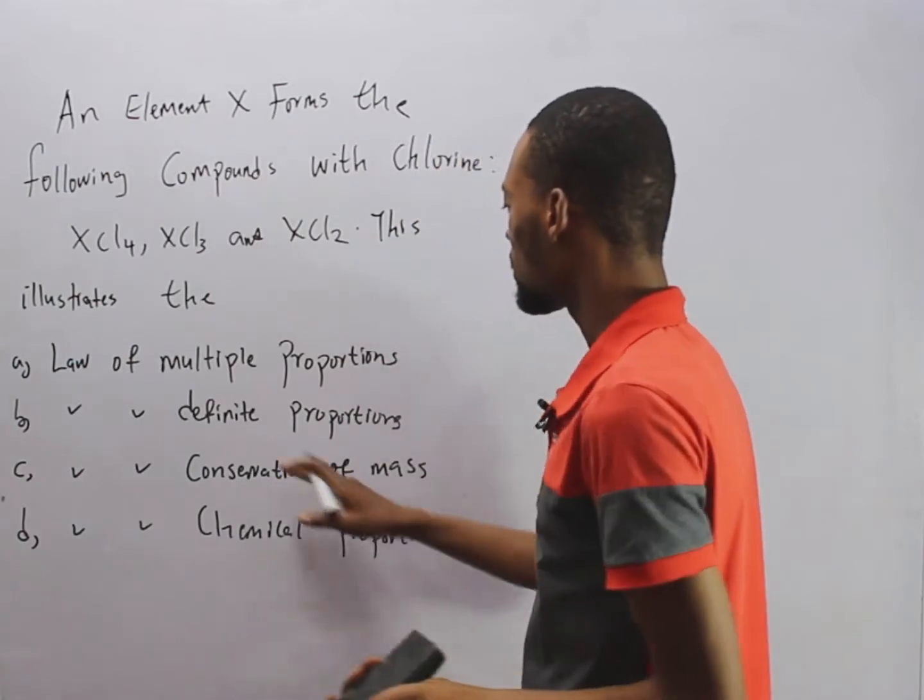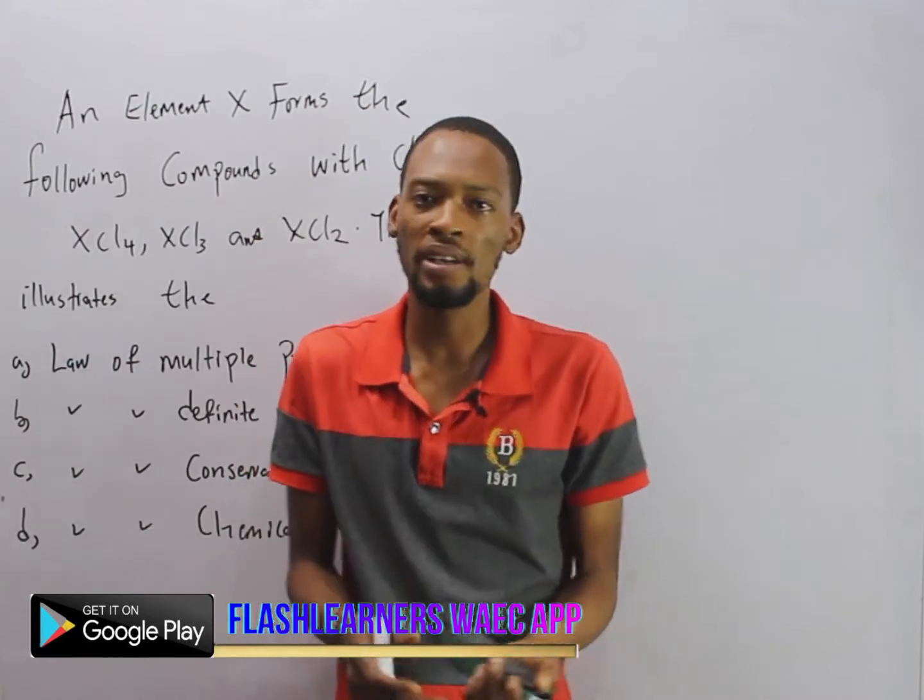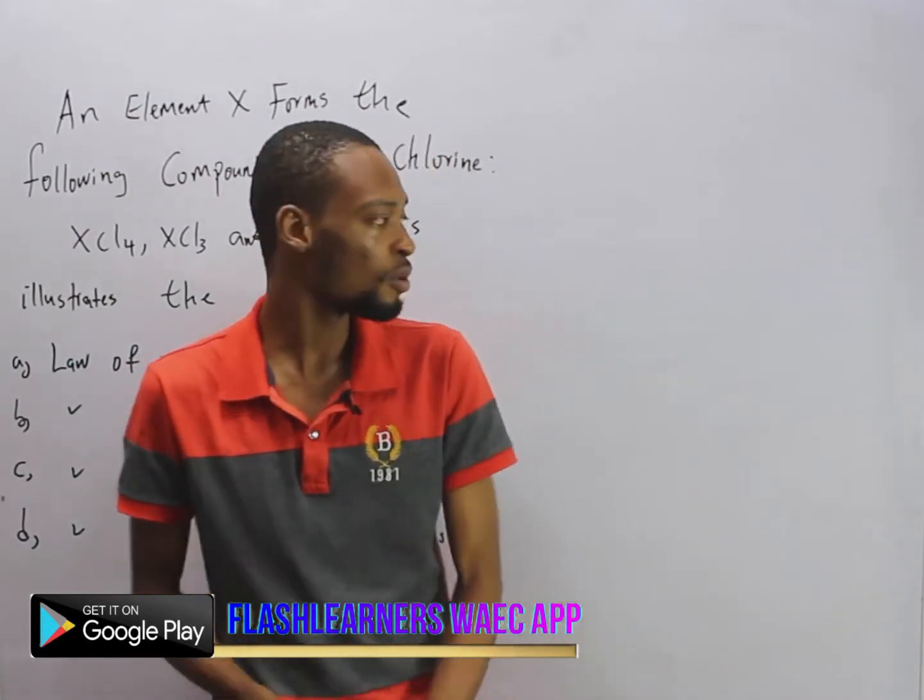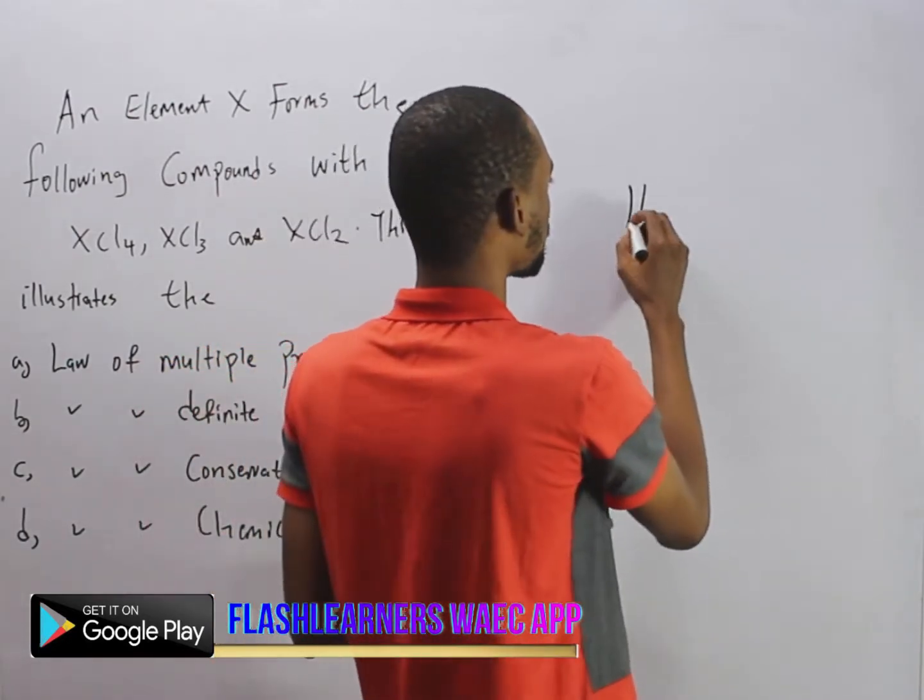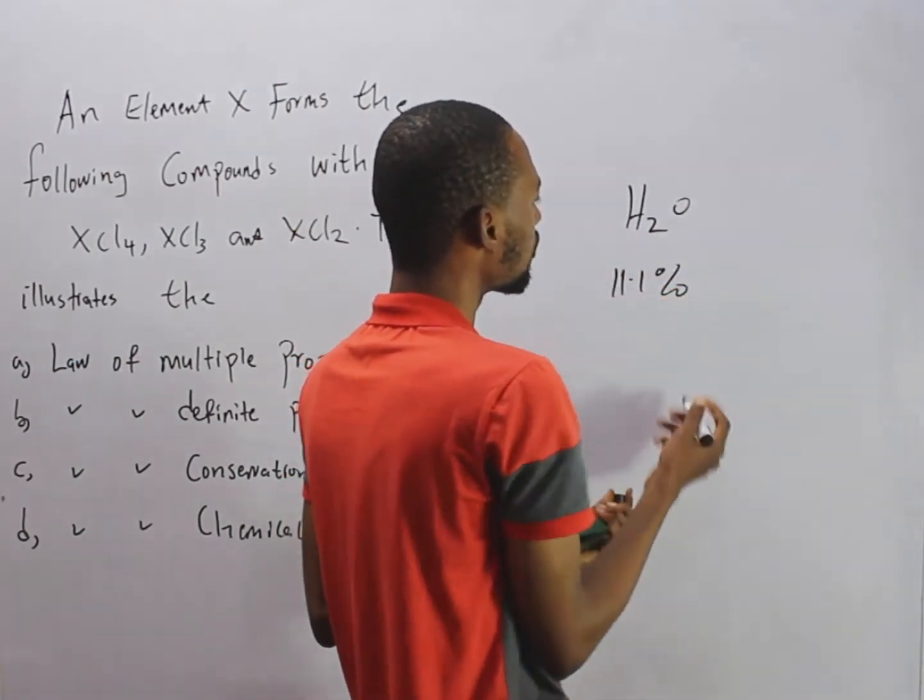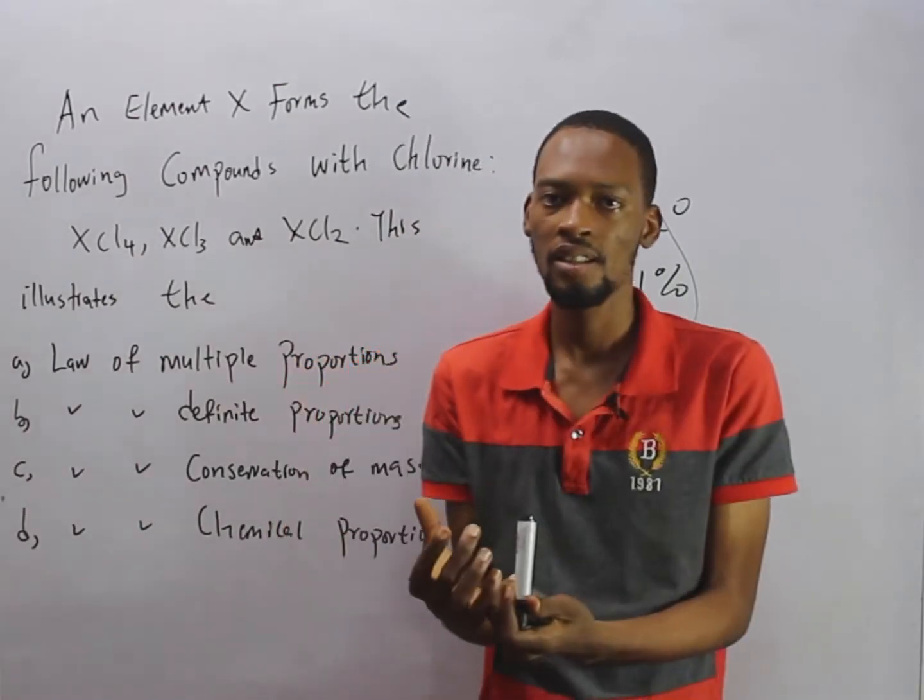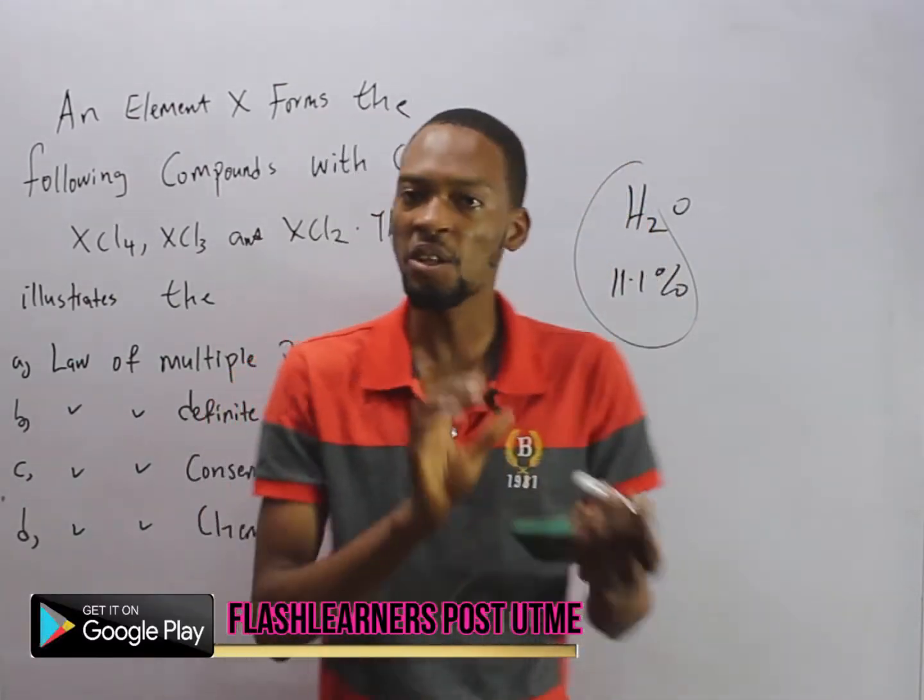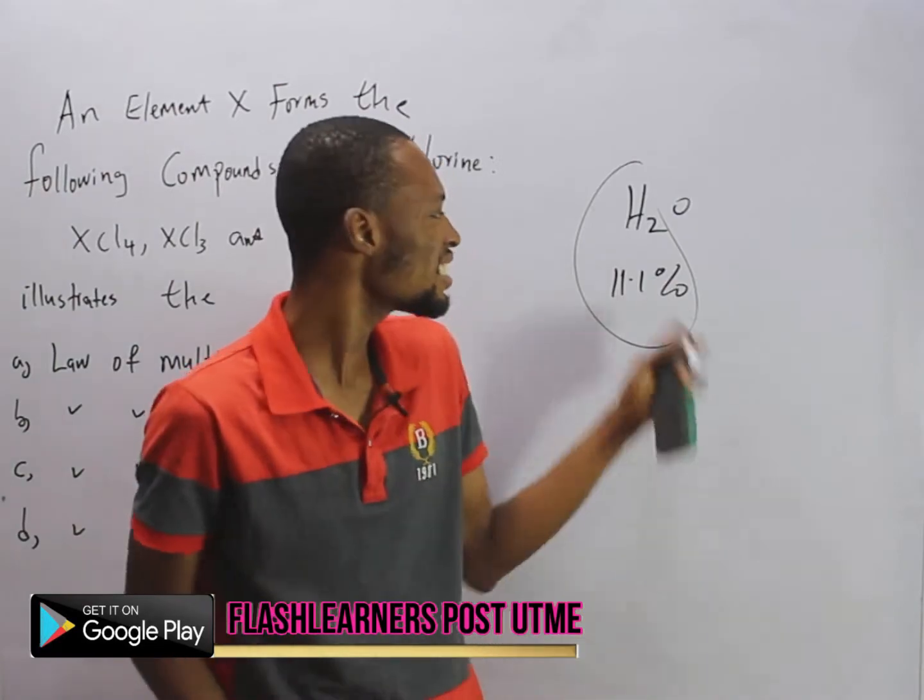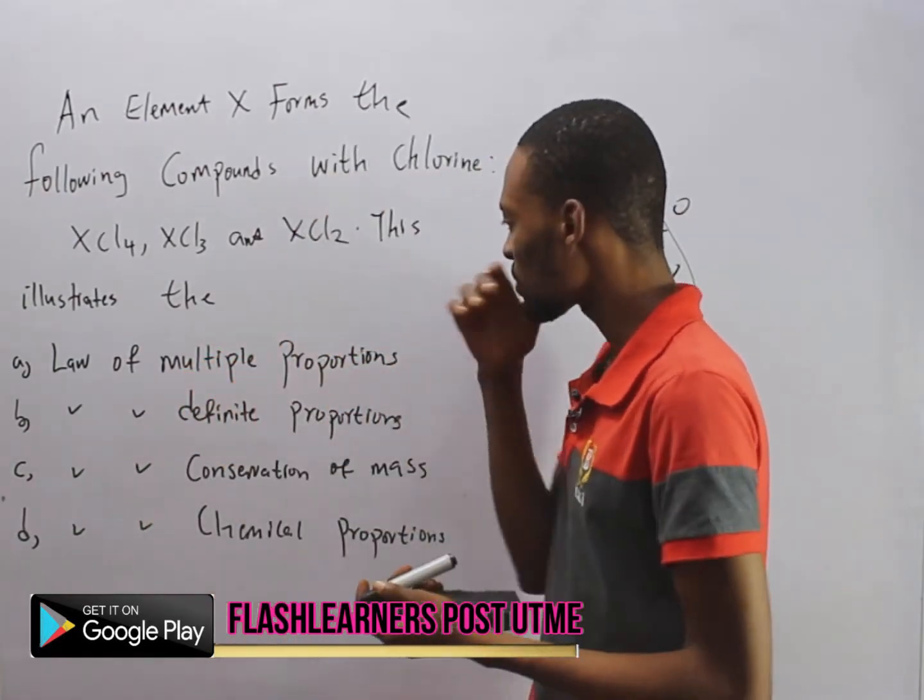While the law of definite proportion or constant composition states that a sample of compound is the same everywhere. For example, water is H2O and it contains about 11.1% of hydrogen. So if you take water to the US, it is still the same hydrogen and oxygen. It doesn't change and it's still in the same percentage. So that's what law of definite proportion speaks about.